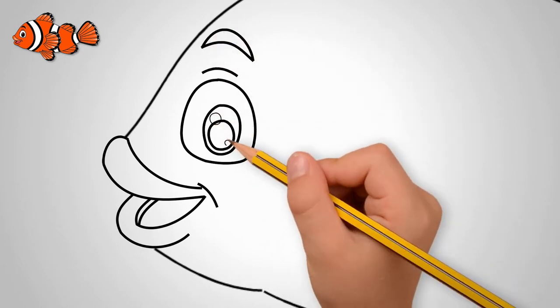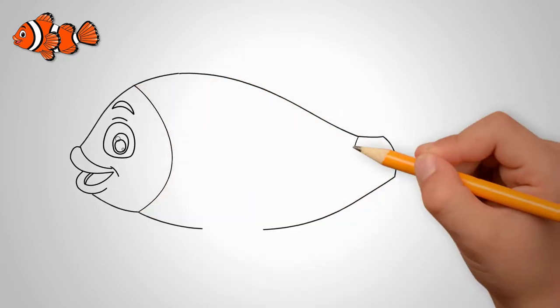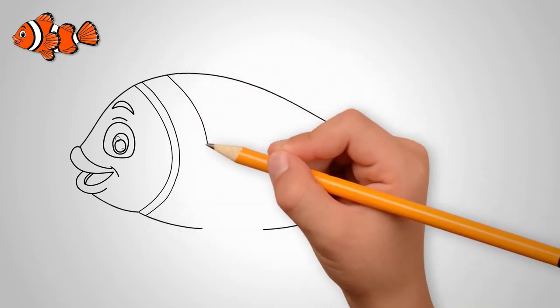Draw an eye over the mouth. We can see only one eye. Draw a large, open eye. Draw the pupil of the eye. Draw an eyebrow above the eye.